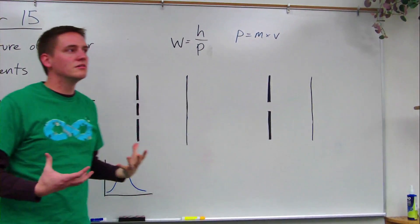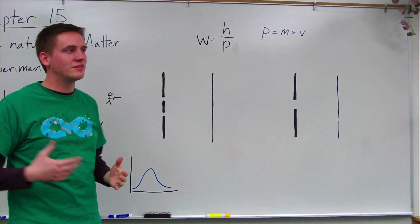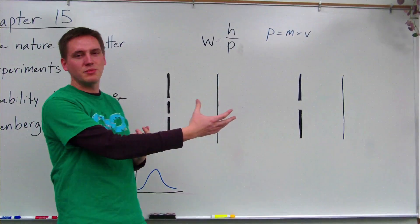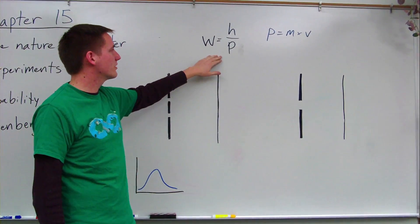So if matter has wavelength, you might be asking, well if it acts like waves, why don't basketballs or people diffract as they go through doors? Let's think about this equation.